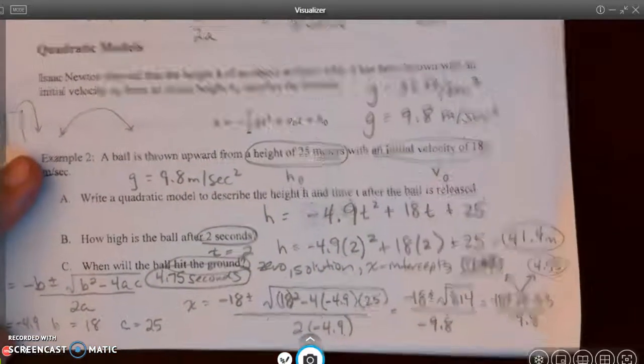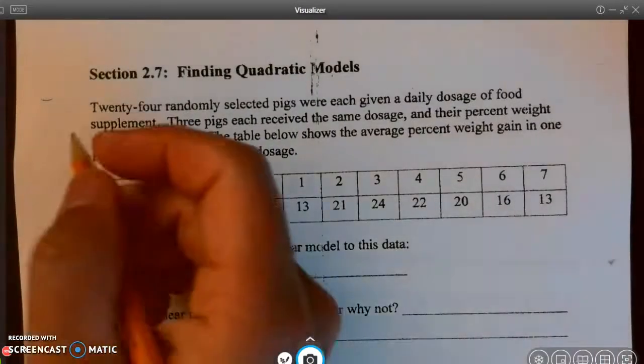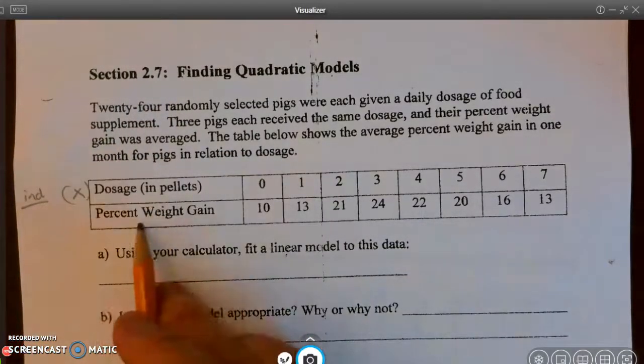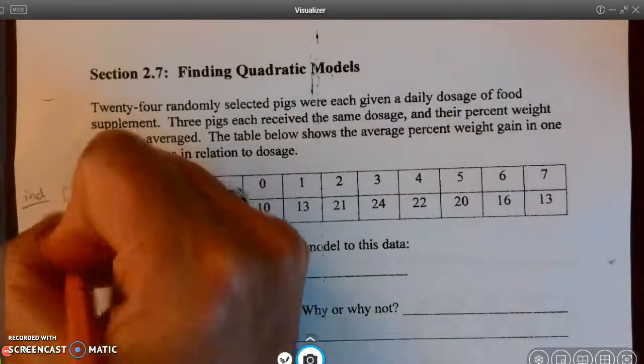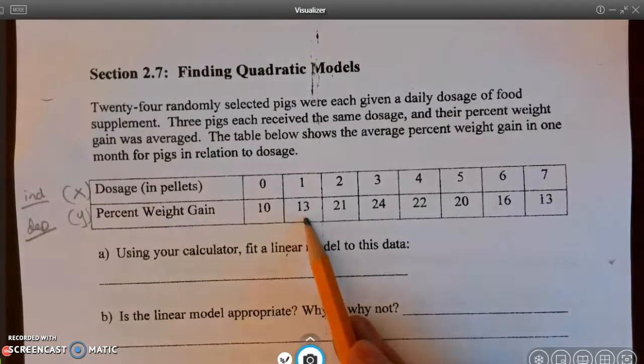And again, I just wanted to show you how to do that using the quadratic formula. All right, so we're going to look on the next page at this next example. 24 randomly selected pigs were each given a daily dosage of a food supplement. Three pigs each received the same dosage, and their percent weight gain was averaged. The table below shows the average percent weight gain in one month for pigs in relation to the dosage. So again, looks like the dosage here, that's going to be my X. So that's going to be my independent. Just going to abbreviate that. And my percent weight gain is going to be Y. And that's my dependent. I'm assuming that this 10 stands for 10%. This 13 stands for 13%, et cetera.